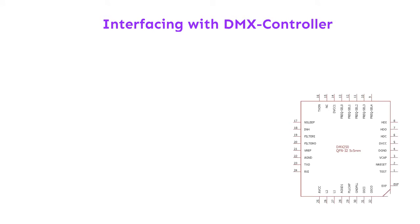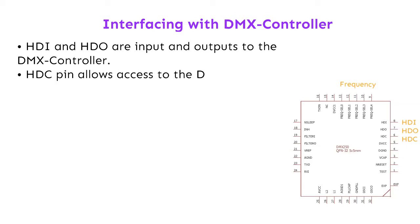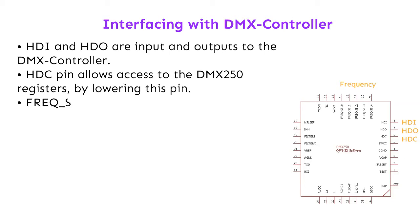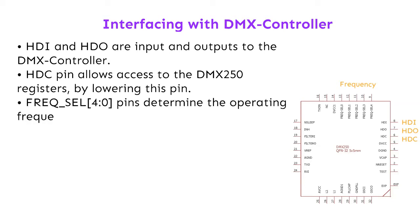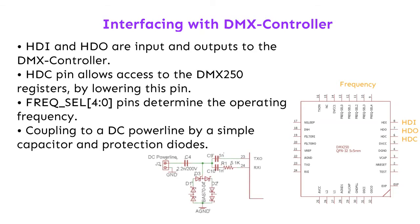Interfacing with the DMX controller: HDI and HDO are inputs and outputs to the DMX controller. The HDC pin allows access to the DMX-250 registers by lowering this pin. Frequency select pins 0 to 4 determine the operating frequency. Coupling to a DC power line is achieved by a simple capacitor and protection diodes.